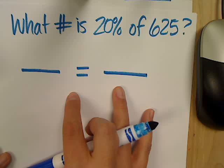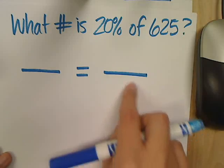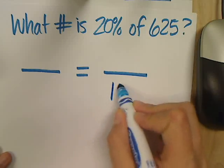Are you writing this down, Nathan? Yes? Okay. So, what always belongs in this right bottom corner? 100.